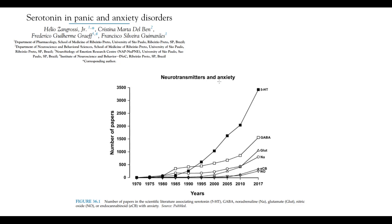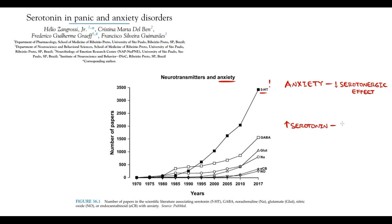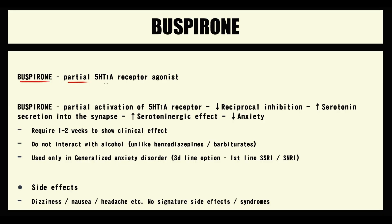Nowadays we consider serotonin a crucial factor in the pathogenesis of anxiety. We still do not know the precise pathogenesis of anxiety, but we believe that one of the crucial factors that cause anxiety is decreasing serotonergic effect. To treat anxiety, because serotonin is highly associated with anxiety, probably by increasing serotonin level in the synapse we can decrease anxiety. One of the drugs that has serotonergic effect is called buspirone.